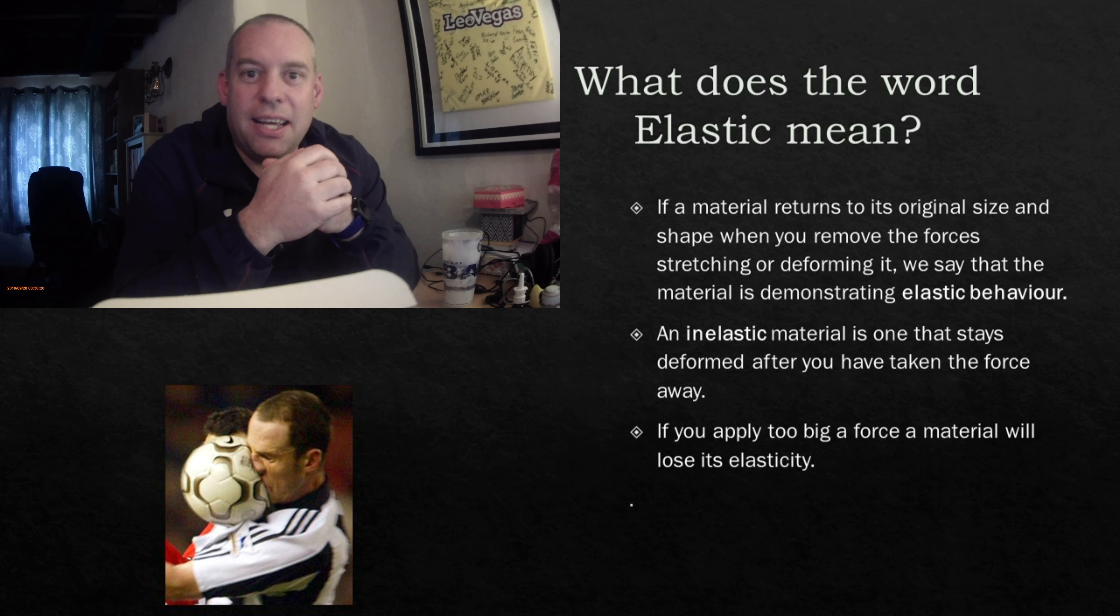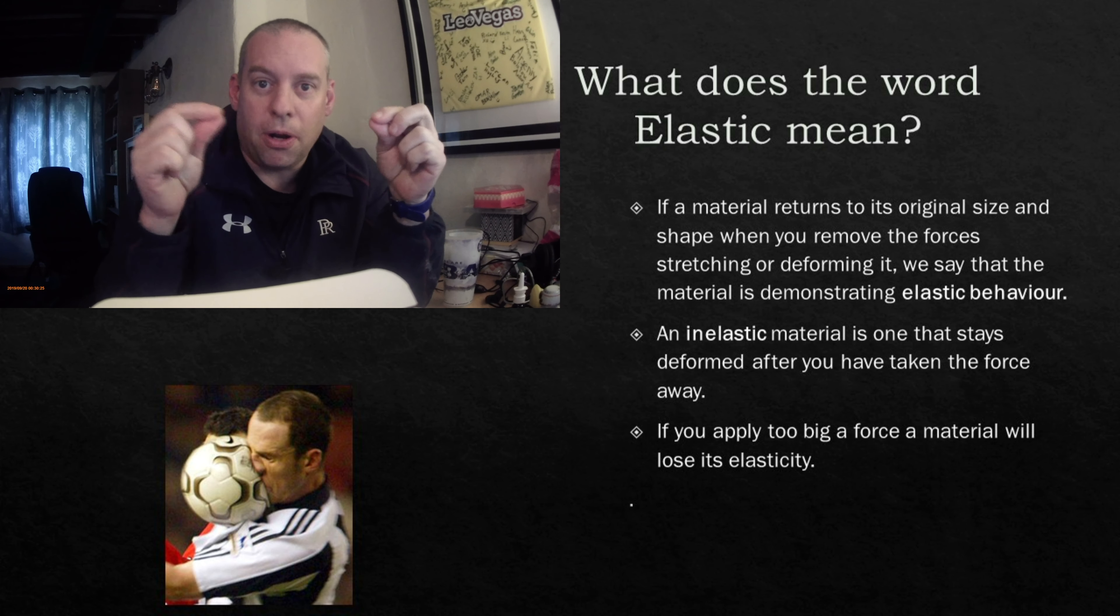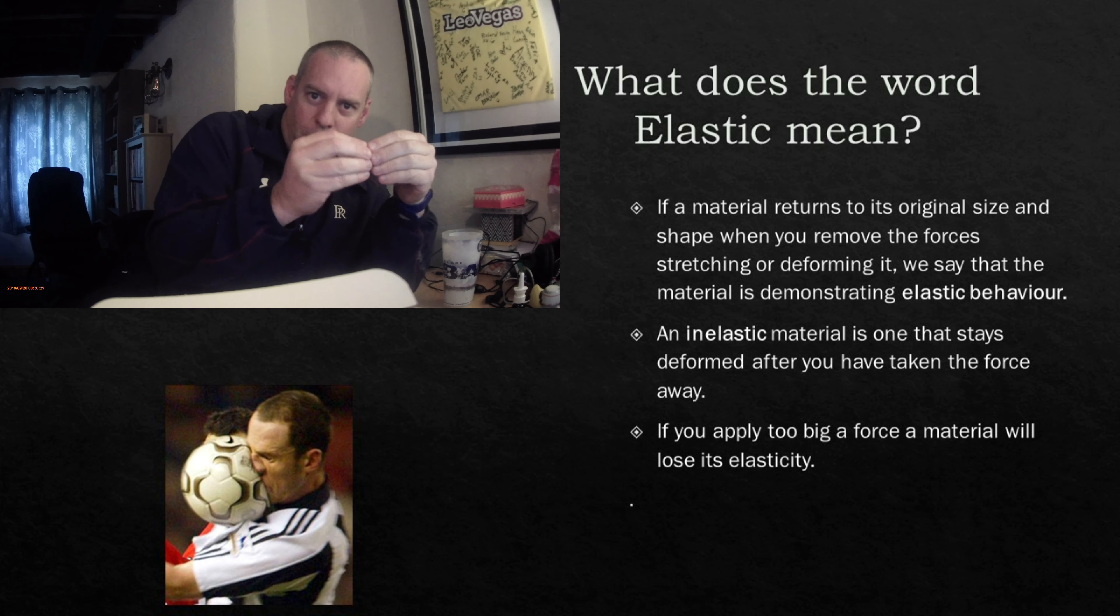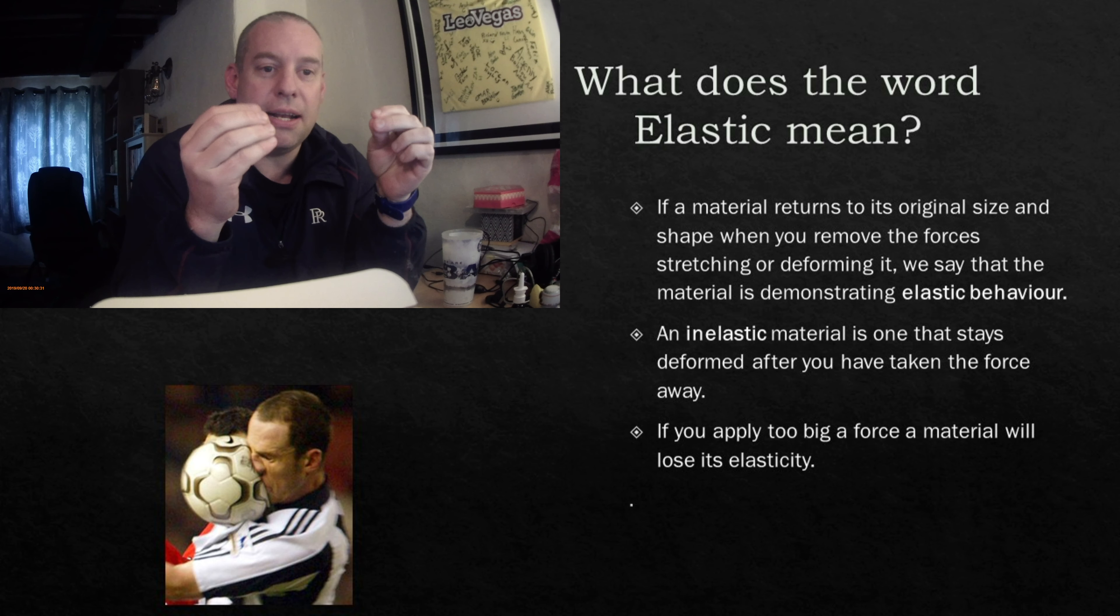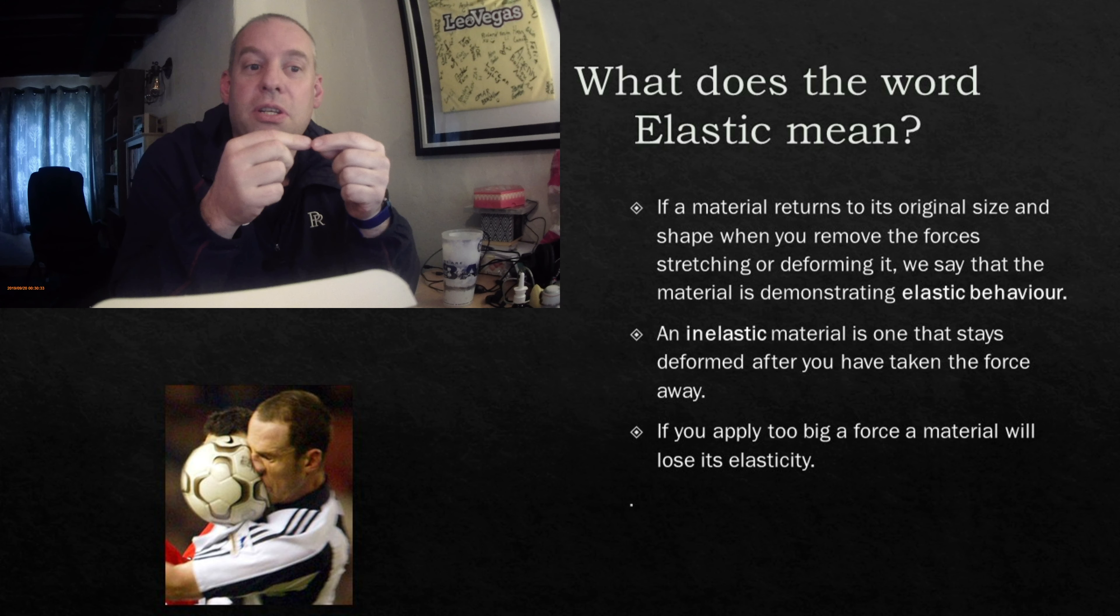And inelastic, the opposite, sometimes called a plastic material, that will when you pull it, keep its shape. So Play-Doh, for example, if I pull Play-Doh or plasticine into a shape, then I let go, it stays in that shape. It doesn't return back to its normal form. It's got zero elasticity.